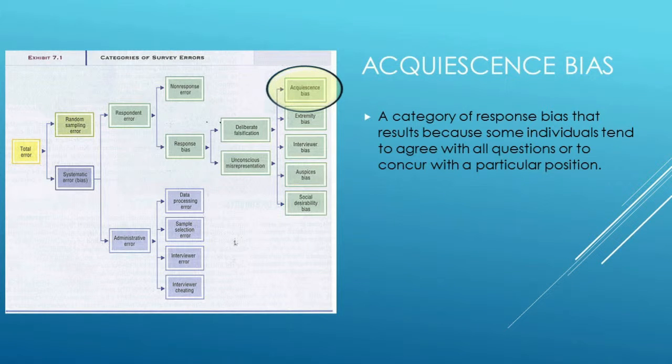In terms of response bias, there are all kinds of potential issues. They tend to break into two major types: either deliberate falsification, or accidental — unintentional falsification where people unconsciously make errors. In terms of deliberate falsification, we're looking at things like acquiescence bias. Acquiescence bias means the respondent couldn't be bothered, so they're just going to agree with whatever you say to get it done quickly. They don't really think about their answers; they just hop through as quickly as possible, or say whatever they think you want to hear. Some individuals tend to agree with anything, and we want to avoid that if possible.